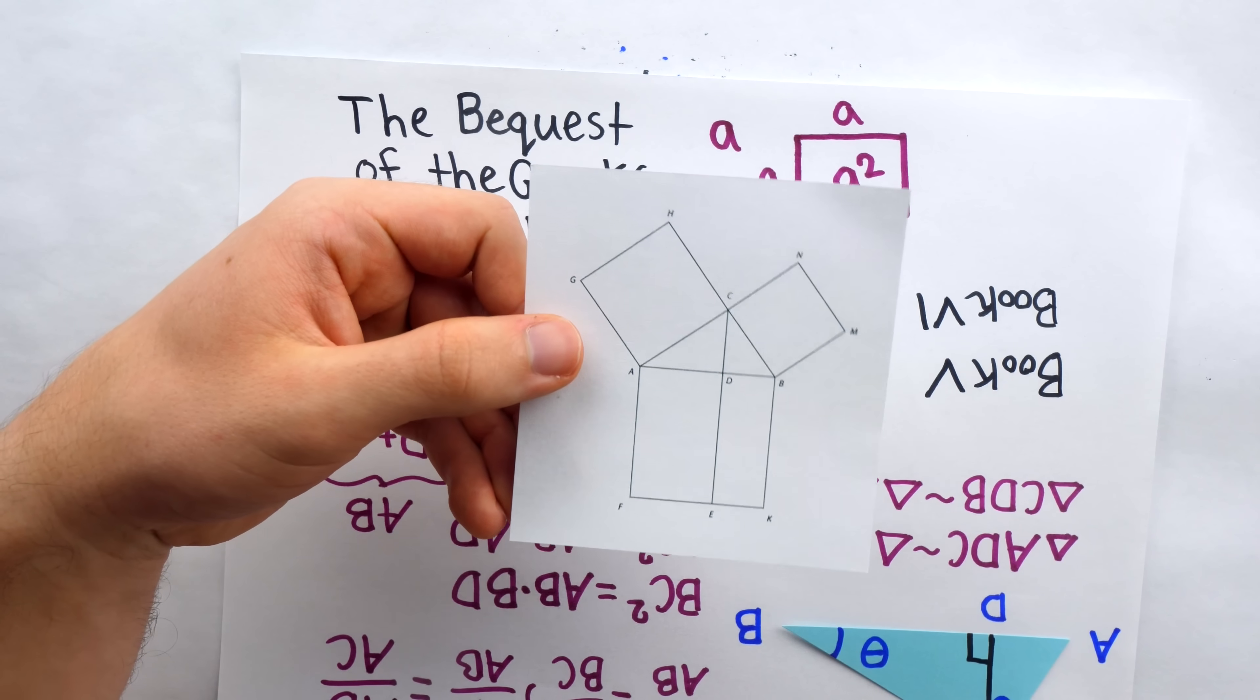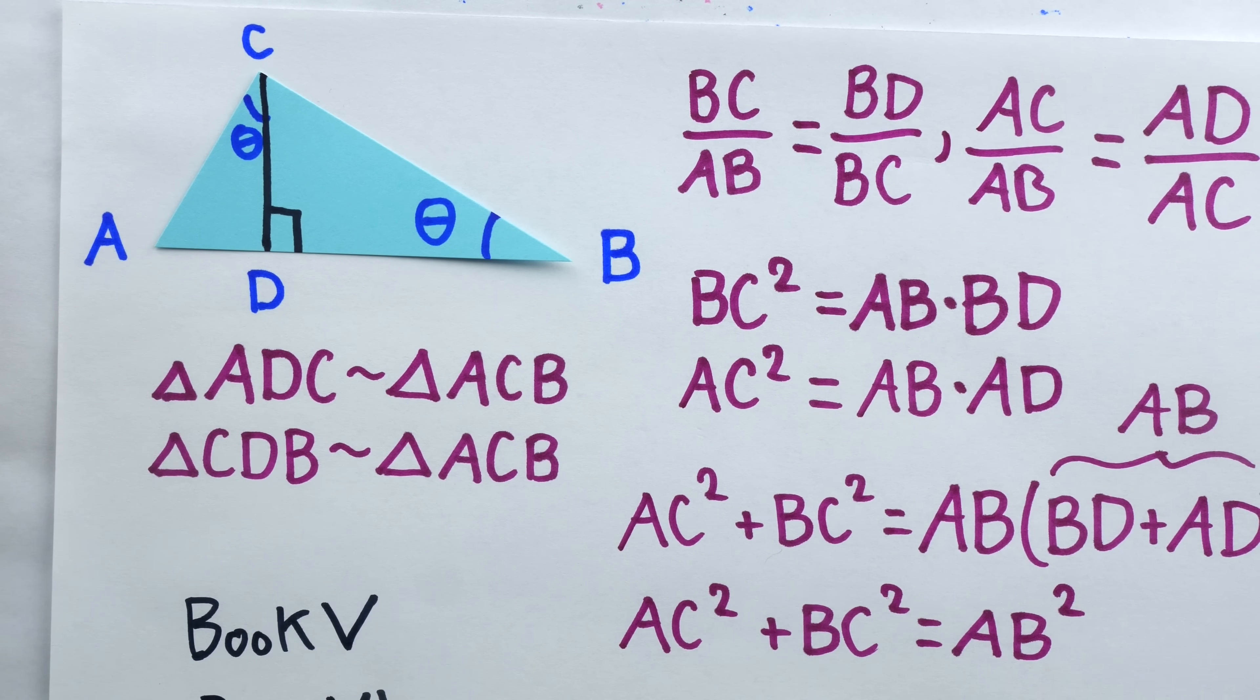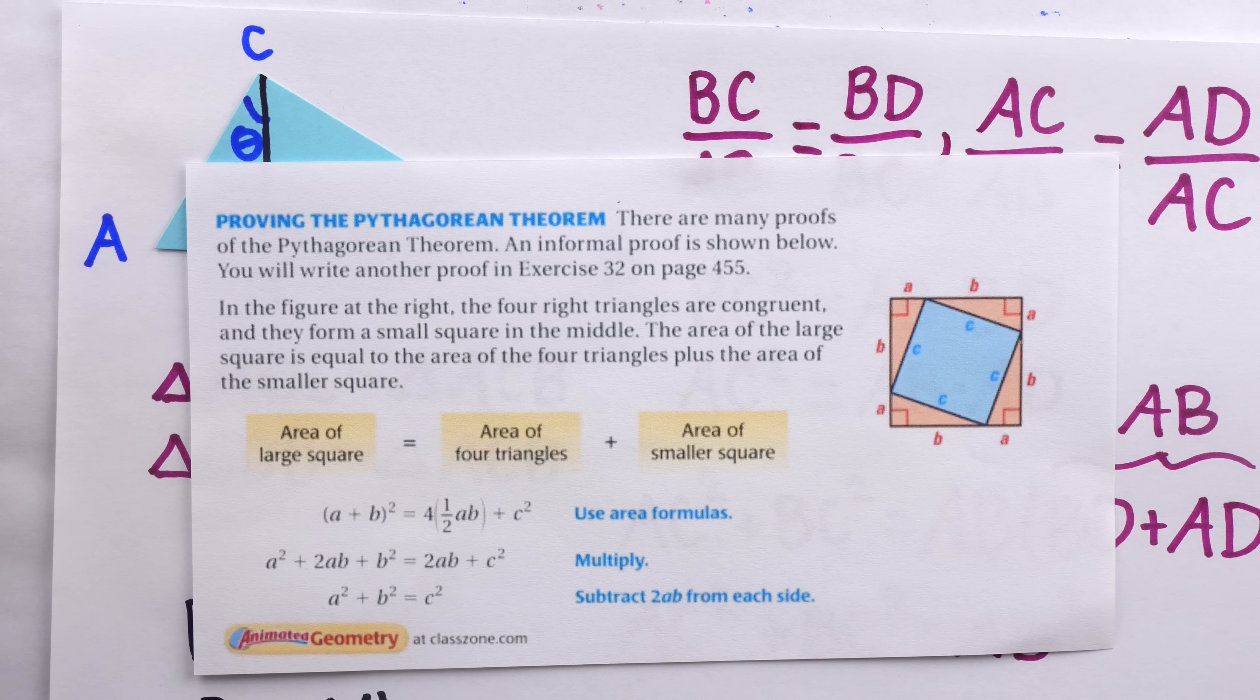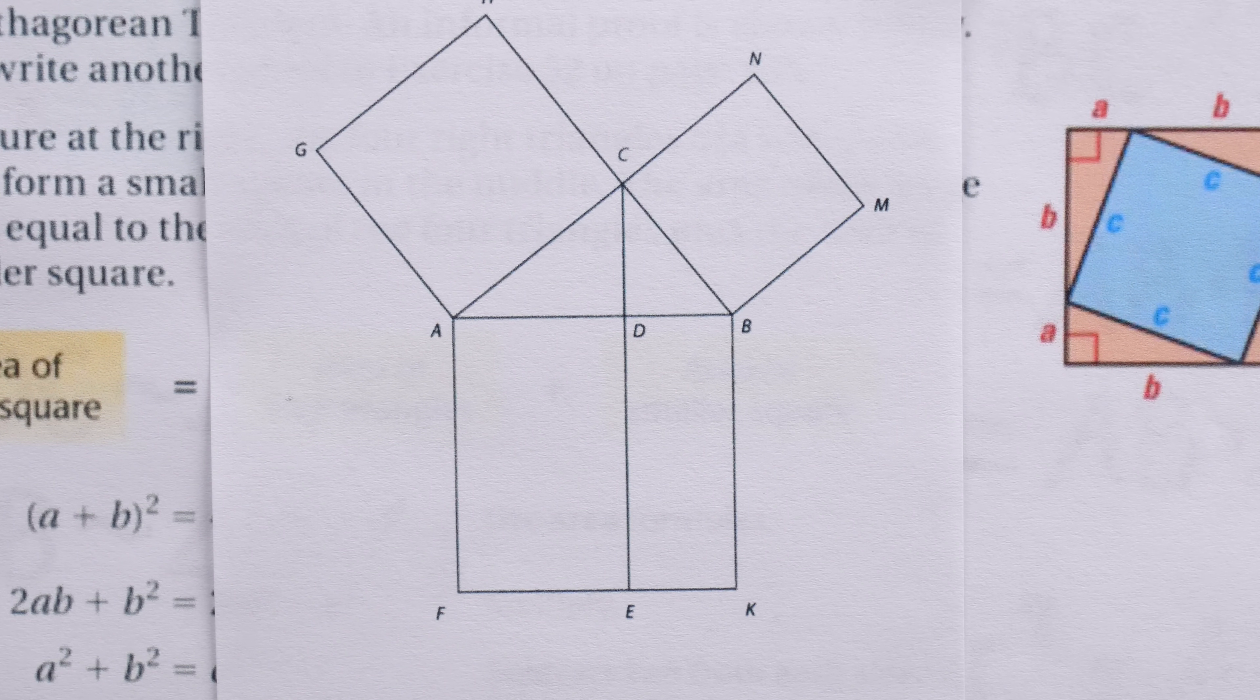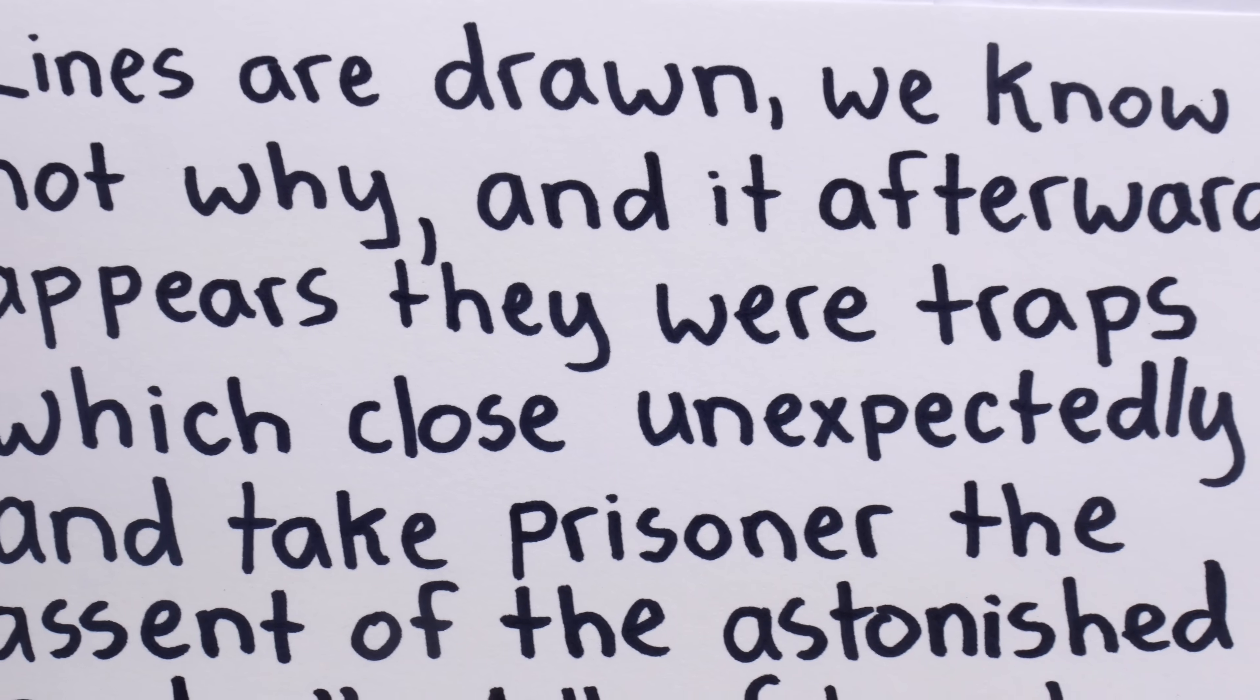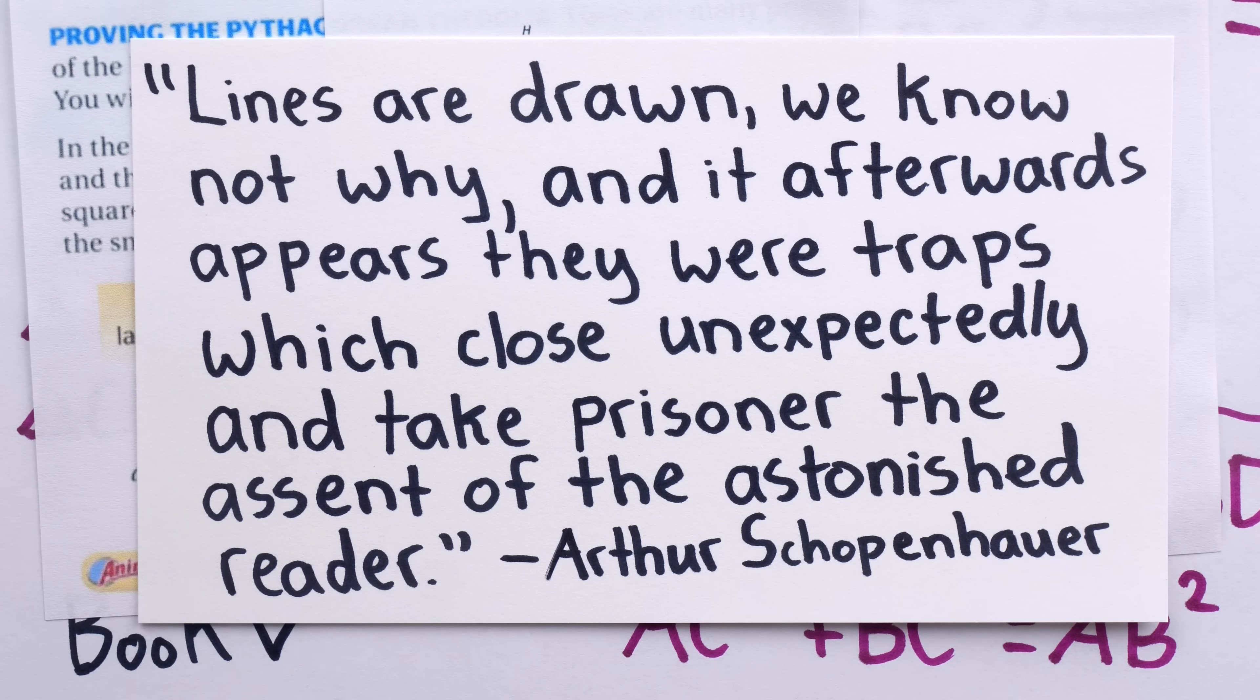So, how many of you were shown the proof from the elements for the Pythagorean theorem in school? How many of you were shown this really simple similarity proof? How many of you, like me, were shown this proof? Despite all the options, many people are still just shown that classic proof from the elements. The philosopher Arthur Schopenhauer was not a huge fan of this proof, saying that lines are drawn, we know not why, and it afterwards appears they were traps which close unexpectedly and take prisoner the ascent of the astonished reader.